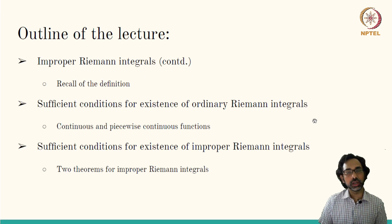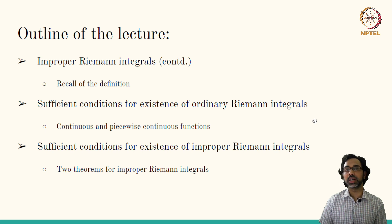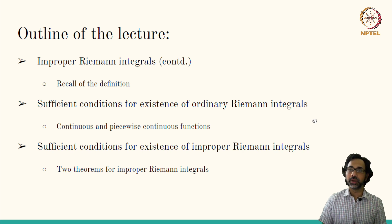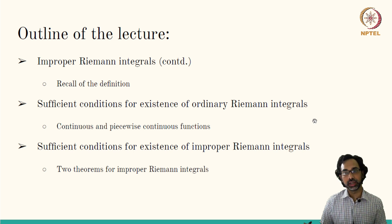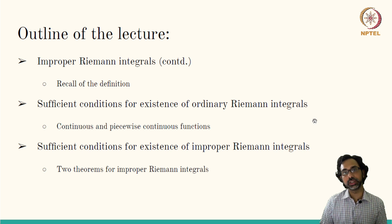In this lecture, we will review the definition of the improper Riemann integral using limits, and we will also see examples where this limit may fail to exist. So we should study the sufficient conditions under which these kinds of integrals are guaranteed to exist, meaning these limits will be finite. Before we do that, we will also see the sufficient conditions for ordinary Riemann integrals and cover the definitions of continuous and piecewise continuous functions. Then we will see two theorems on sufficient conditions for the existence of improper Riemann integrals.